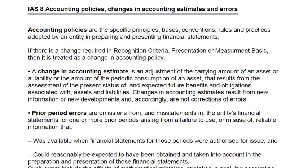If the life is 4 years, the depreciation rate would be 25% per year using the straight-line method. Now, after 1 year has passed, the asset is not in a condition to work for 3 more years, so management decided to revise the estimate from 4 years total life to 3 years in total. One year has already passed, leaving 2 more years of use. The depreciation rate would change from 25% per year to 33% per year. This is known as a change in accounting estimate.